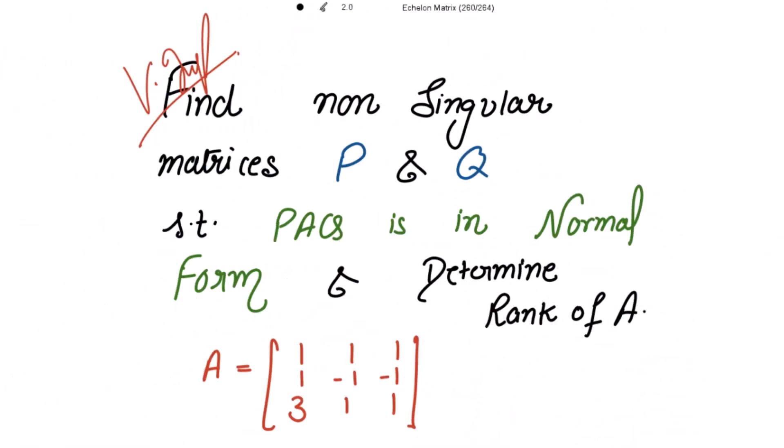This is a very important example. We need to find the non-singular matrices P and Q such that PAQ is in normal form, and then we need to determine the rank of A, where A is equal to the given matrix.